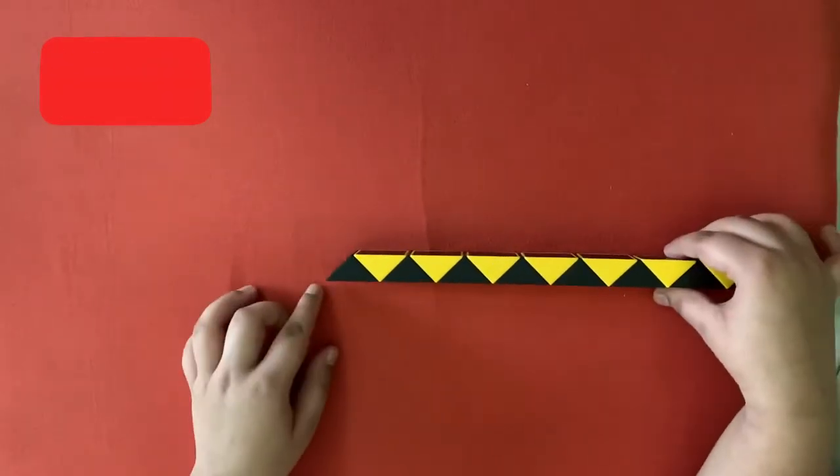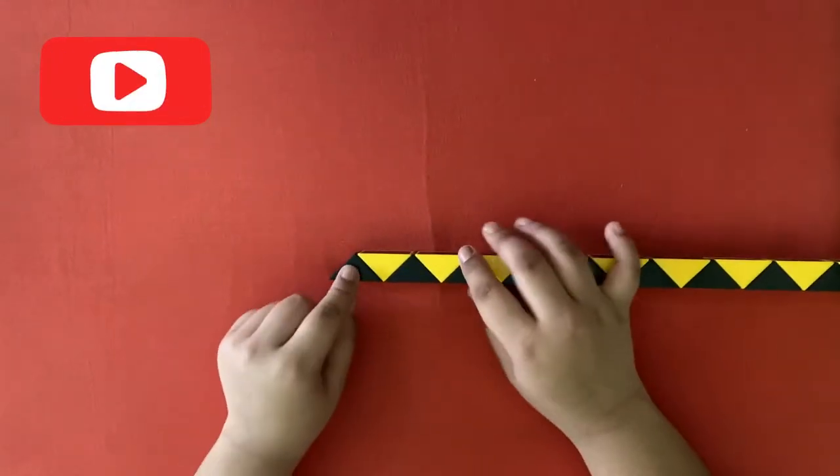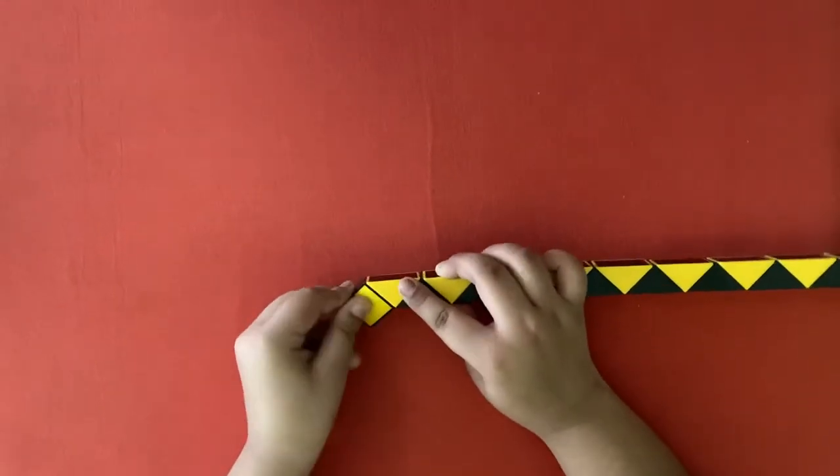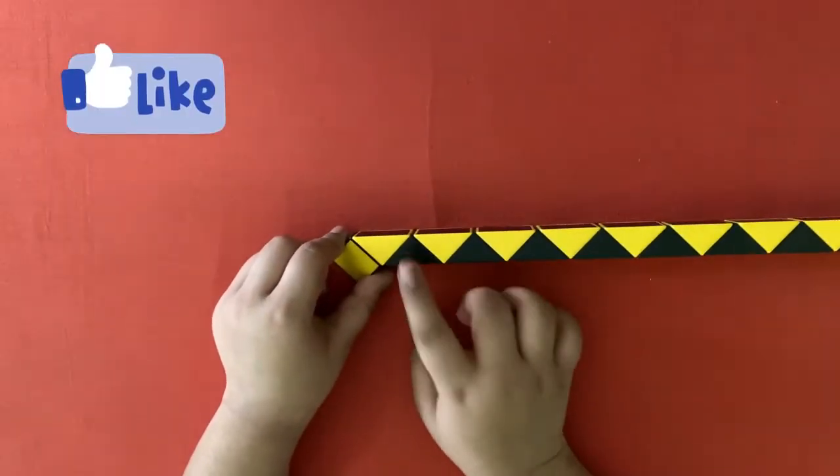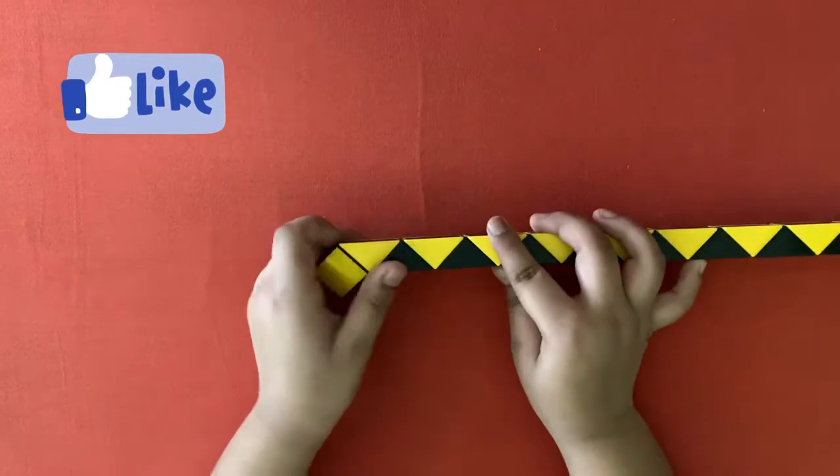Hold your snake cube in this position. Take the first piece, rotate it away from you. Now count two pieces: one, two. Rotate the second piece towards you.